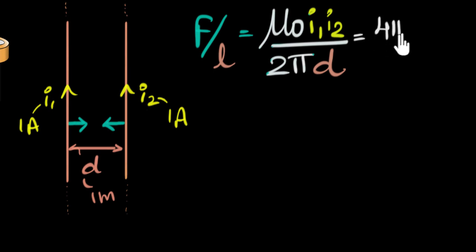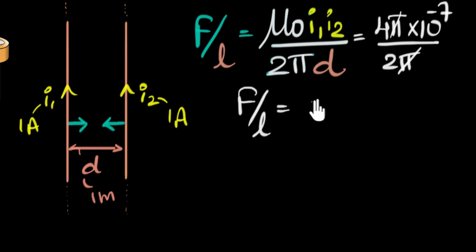And we know the value of mu naught. Mu naught value is four pi times 10 to the power minus seven. This is one divided by two pi. And d is also one. So this cancels. And so now I get force per length to equal two times 10 to the power minus seven newtons per meter.